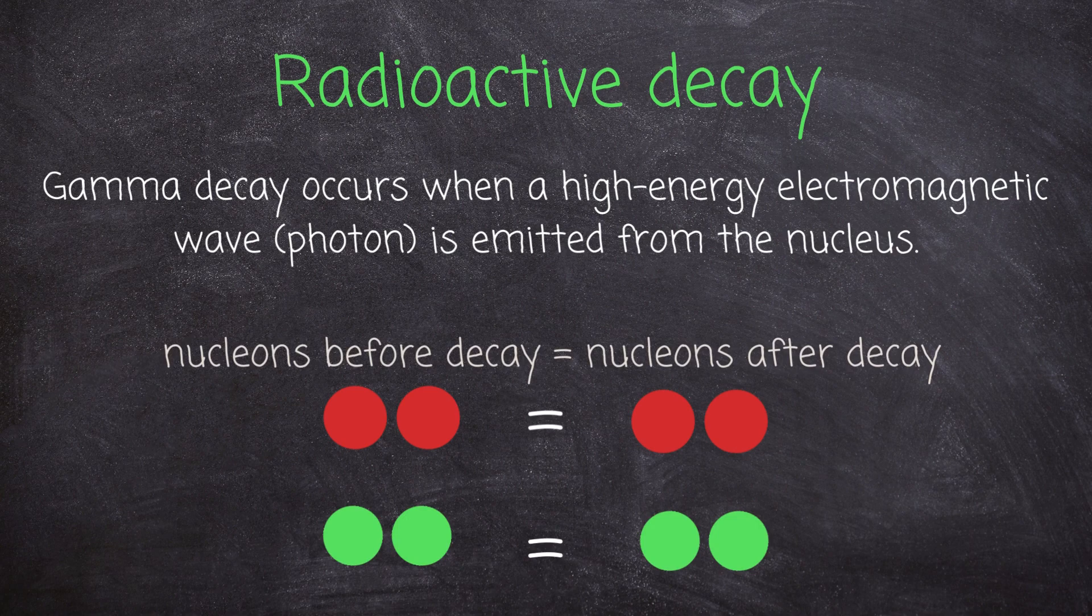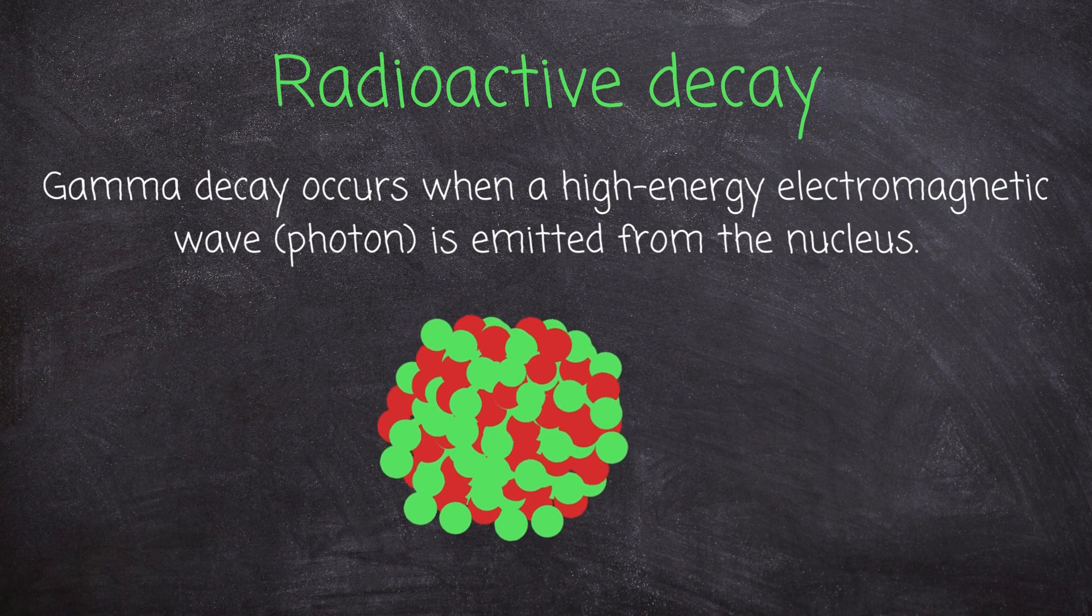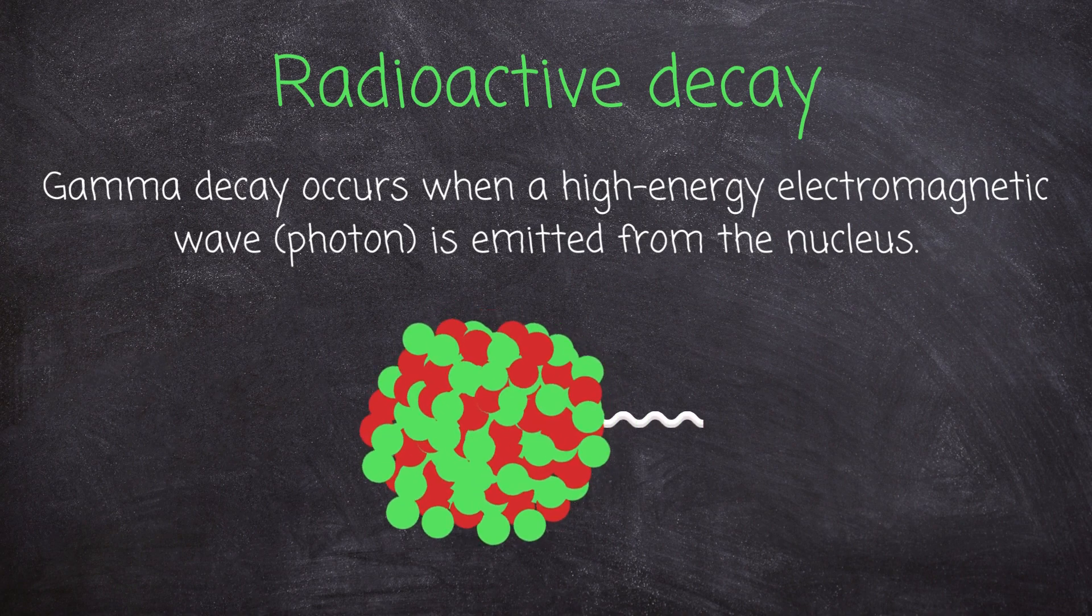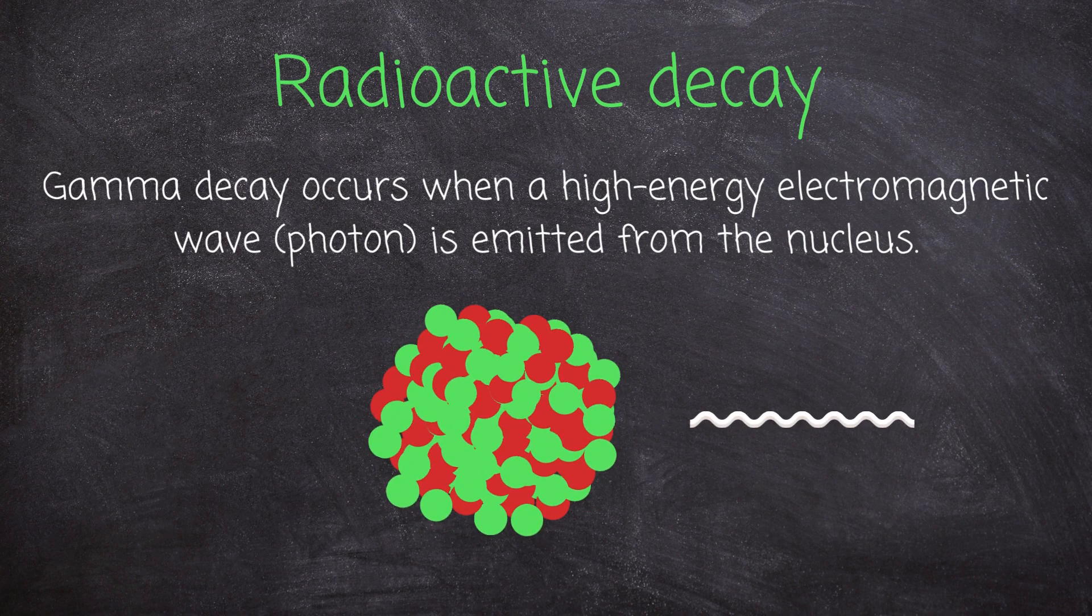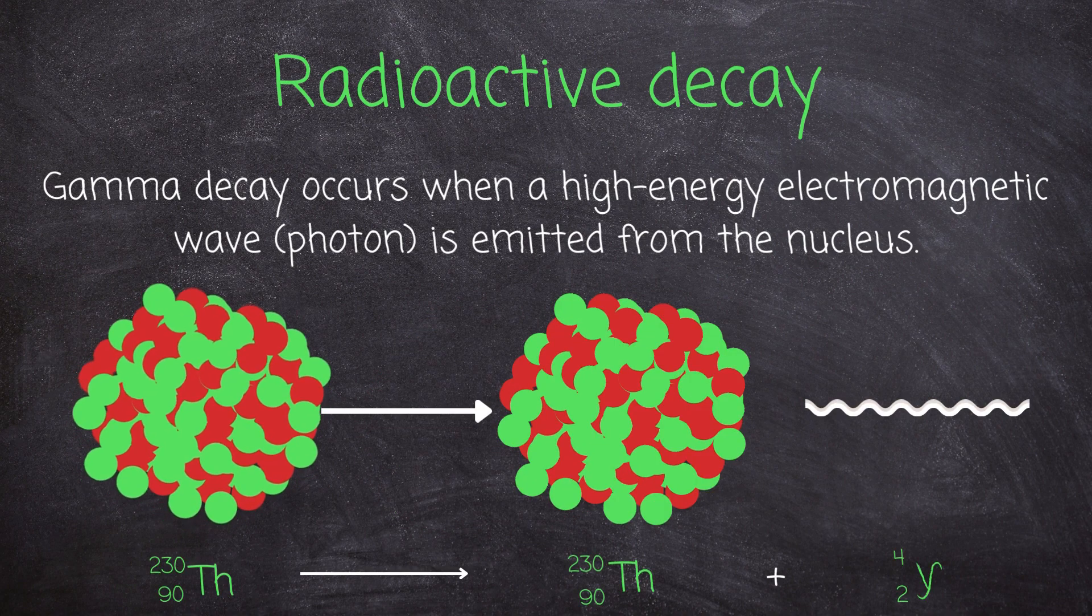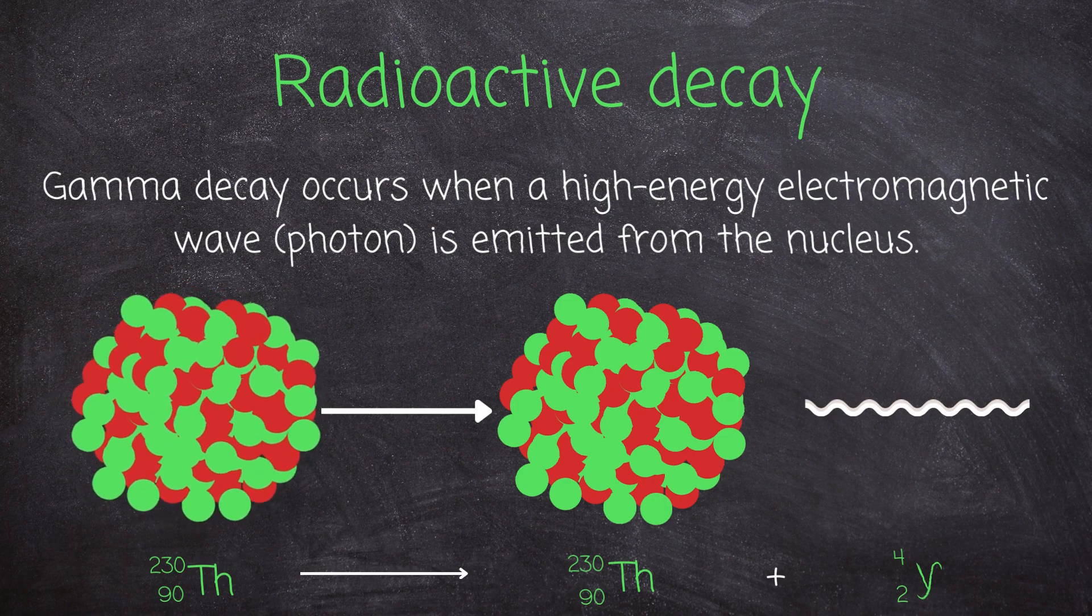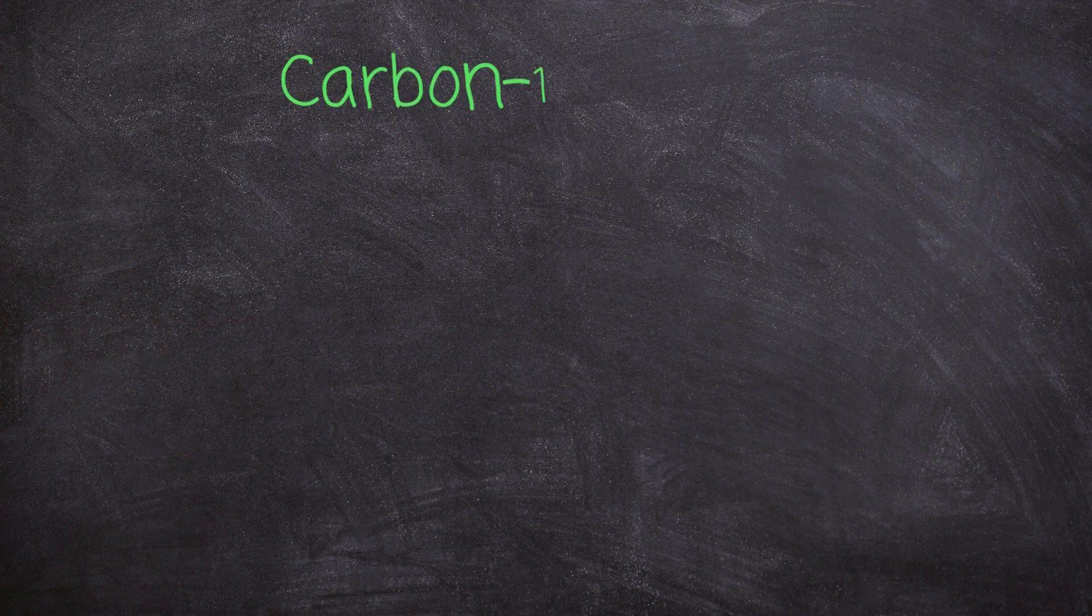For example, thorium undergoes gamma radiation, emitting a photon. Now let's delve into one of the most intriguing applications of isotopes: carbon-14 dating.